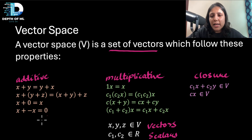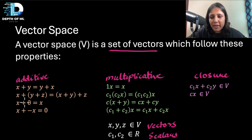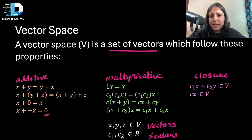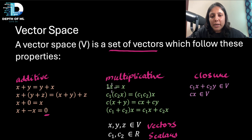The additive properties say the space is commutative, associative, has an additive identity (adding it to any vector returns that vector), and has a negative element such that adding a vector and its negative gives the additive identity. The multiplicative properties include a multiplicative identity such that multiplying it by any vector returns that same vector.